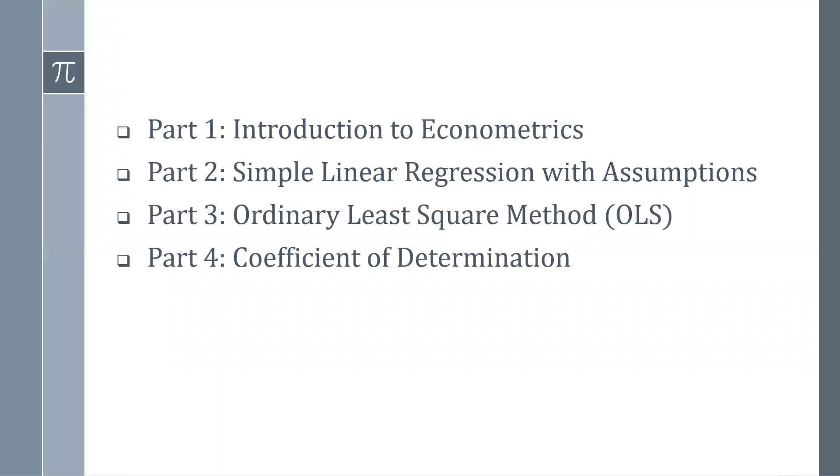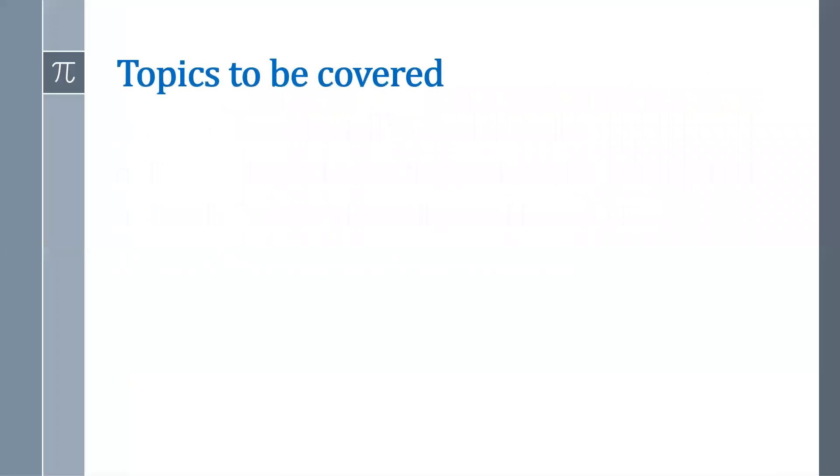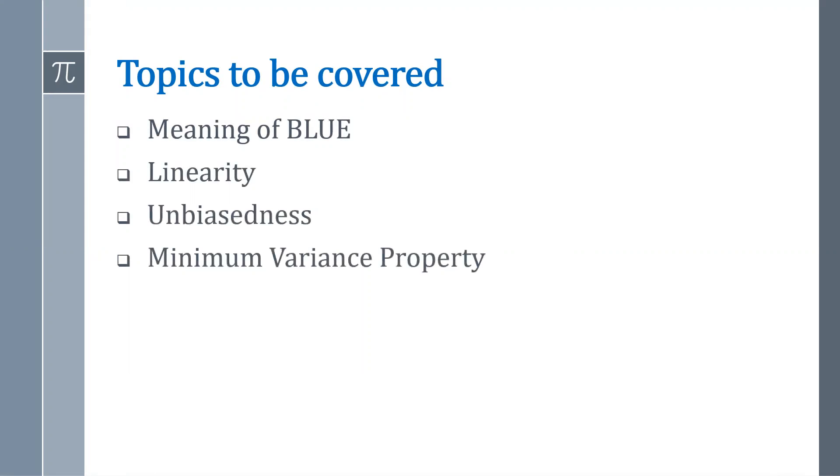In the first four parts, I have discussed the idea of econometrics, simple linear regression with assumptions, ordinary least square method, and coefficient of determination. In this video, I'm going to discuss the meaning of BLUE and then three properties: linearity, unbiasedness, and minimum variance property.